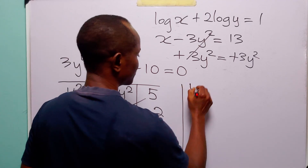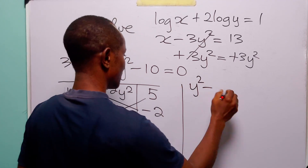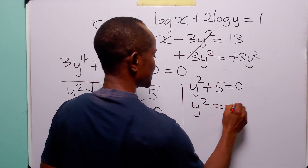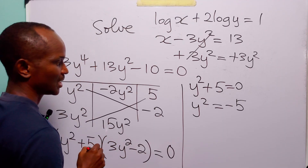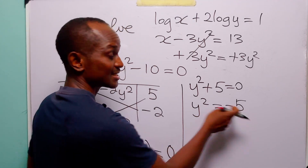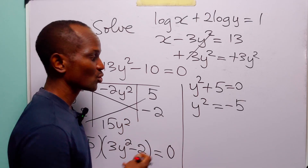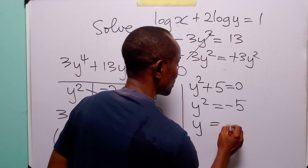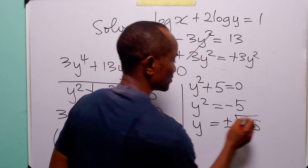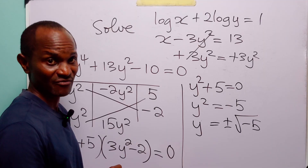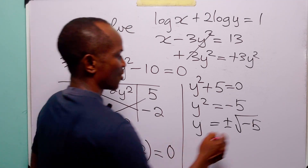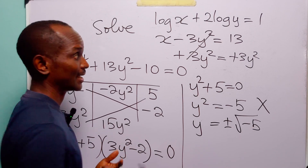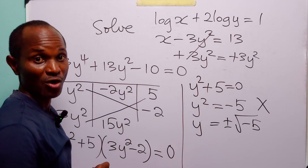From here, we have that either y squared plus 5 is equal to 0, from where y squared is equal to minus 5. You can already see that if we take the square root of both sides, we are going to have y is equal to plus or minus the square root of minus 5, and this is going to give us a complex value. So we are not going to accept this, because we are looking for real values of x and y that satisfy this system of equations.